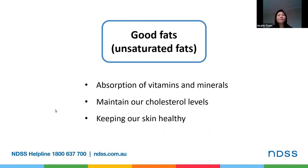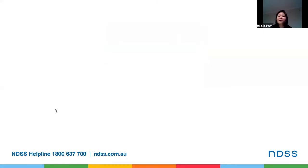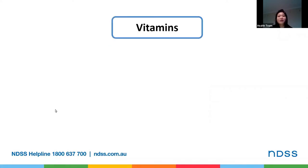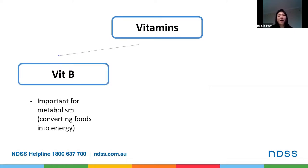One of the nutrients commonly found in carbohydrate-rich foods, like your whole grains, are actually your good fats, such as unsaturated fats. They not only help the absorption of vitamins and minerals, but they also help maintain our cholesterol levels and keep our skin healthy.